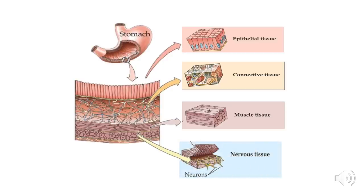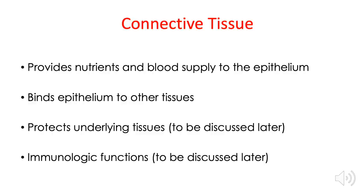The last tissue that can make up an organ in the body is nervous tissue. The connective tissue functions to provide nutrients and blood supply to the avascular epithelium. It also binds the epithelium to other tissues in the organ. Aside from these two functions, the connective tissue can also provide protection — and some cells that make up the connective tissue can contribute to immune responses. These additional functions will be discussed thoroughly as we go through the lecture.